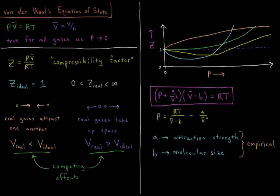This video will discuss the van der Waals equation of state for gases as a correction to the ideal gas law. In the previous video we discussed the ideal gas equation PV̄ = RT, where V̄, the molar volume, is equal to the total volume divided by the number of moles of gas.